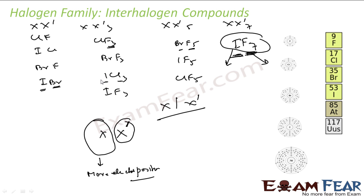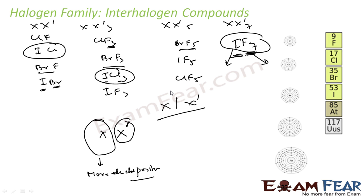For other examples, bromine and iodine give IBr3. For the BrF series, we have BrF, BrF3, BrF5, but we don't have BrF7. For the ICl series, we have ICl and ICl3, but we don't have ICl5. It all depends on the ratio of electronegativity of the two atoms - the greater the ratio, the more bonds are possible.